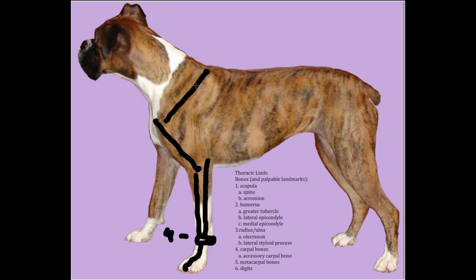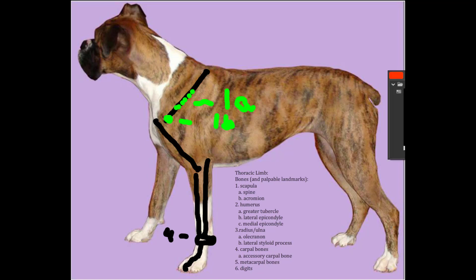To draw the palpable prominences, we'll start with the spine of the scapula and indicate that it runs basically the length of the scapula on the lateral aspect — that's 1a. 1b would be the acromion of the scapula, that distal palpable teardrop-shaped structure on the distal aspect of the spine.